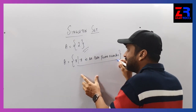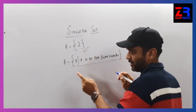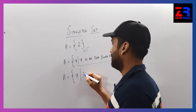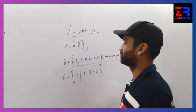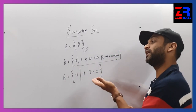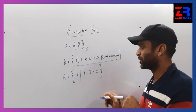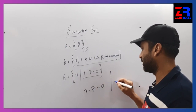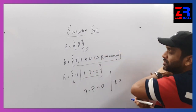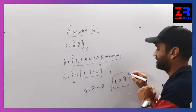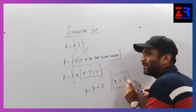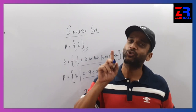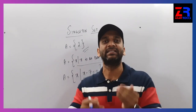2. So it is a singleton set. We can take one more example: A is equal to X such that X minus 7 is equal to 0. You have to solve this. X minus 7 is equal to 0, therefore X is equal to 7. So X's value is one value only. The element has to be only one - it is called a singleton set.